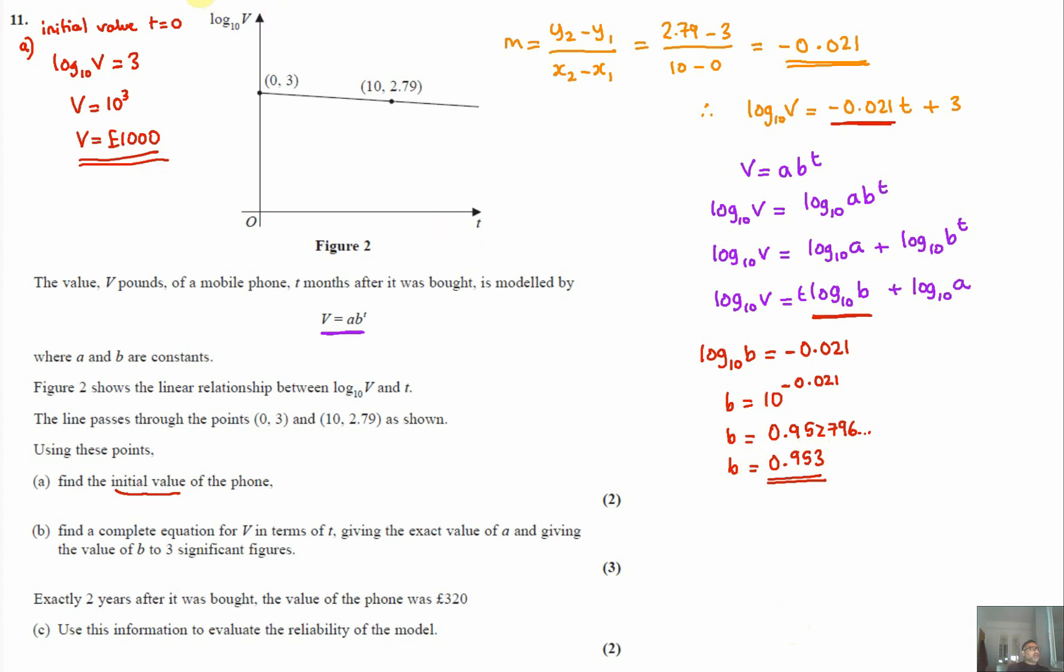Similarly, we can compare our plus c, and this is a constant here. So looking at that, we can see that log to base 10 of a equals three. So that means that a will be 10 to the power of three, so a equals 1000.